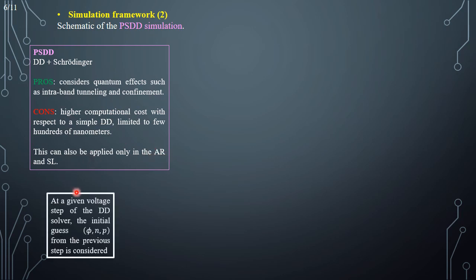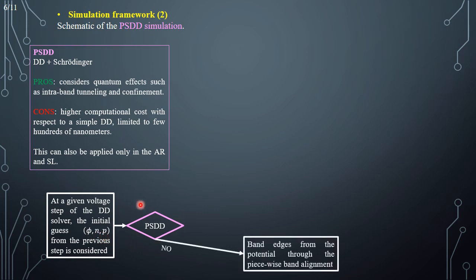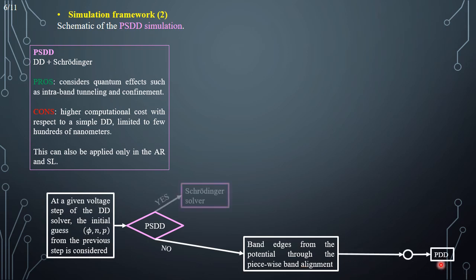The way the algorithm works is as follows. At a given voltage step, the drift-diffusion solver takes its initial guess — made out of the electrostatic potential, the electron density, and the hole density — from the previous step. Then we have to decide whether or not the Schrödinger mode is activated. If not, it is possible to compute the band edges from the electrostatic potential through the piecewise defined band alignment, given for instance by the valence band offset and the conduction band offset. Finally, the usual Poisson drift-diffusion step is carried out.